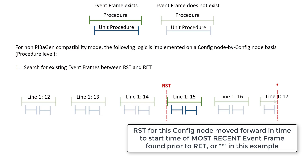The interface then completes history recovery for that Event Frame, recovering any unit procedure or sub-batches within line 1, 15, and then continues recovering line 16, line 17. Since RET is not specified in this case, the interface finishes recovery and continues running in real-time mode.